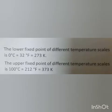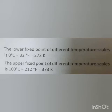The relation between the different scales of temperature: the lower fixed point is 0 degrees Celsius, which equals 32°F and equals 273 K. The upper fixed point is 100 degrees Celsius, which equals 212 degrees Fahrenheit, which equals 373 Kelvin.